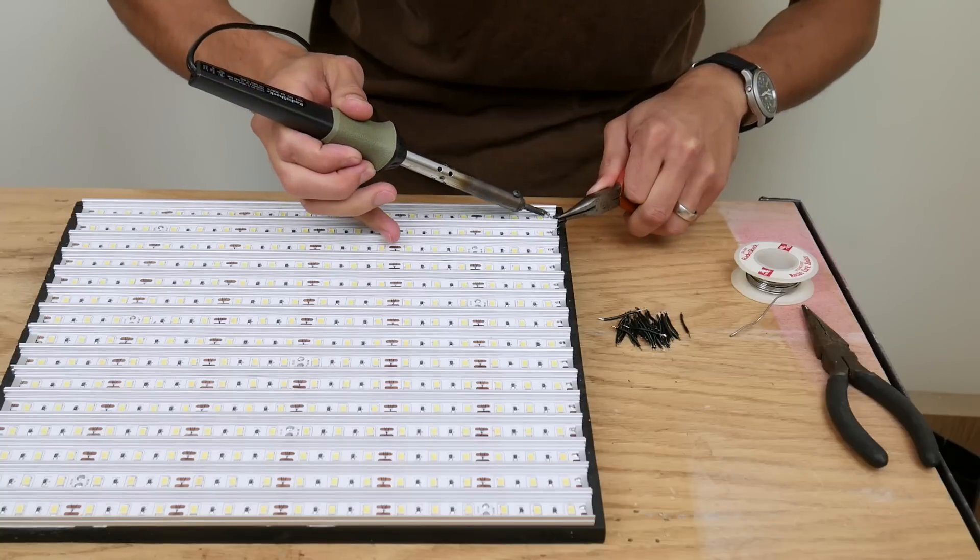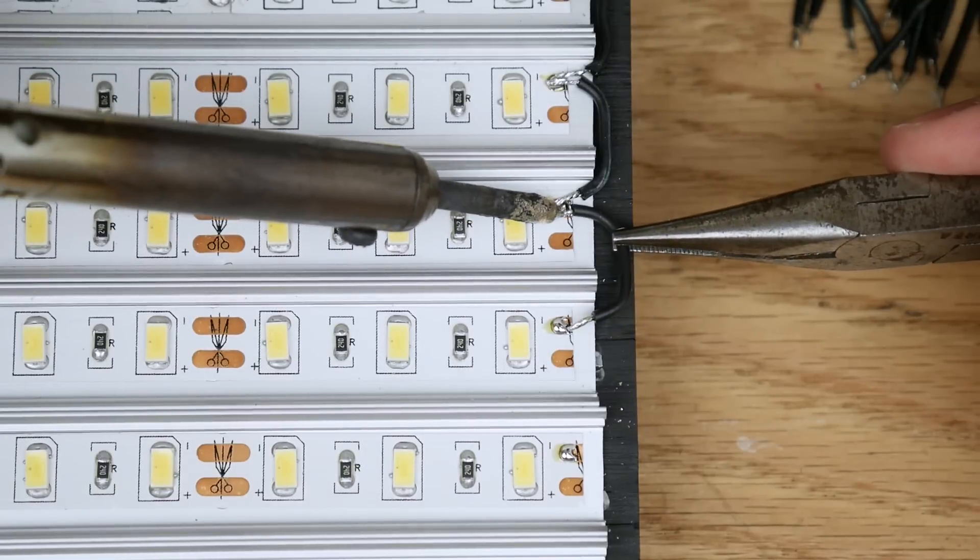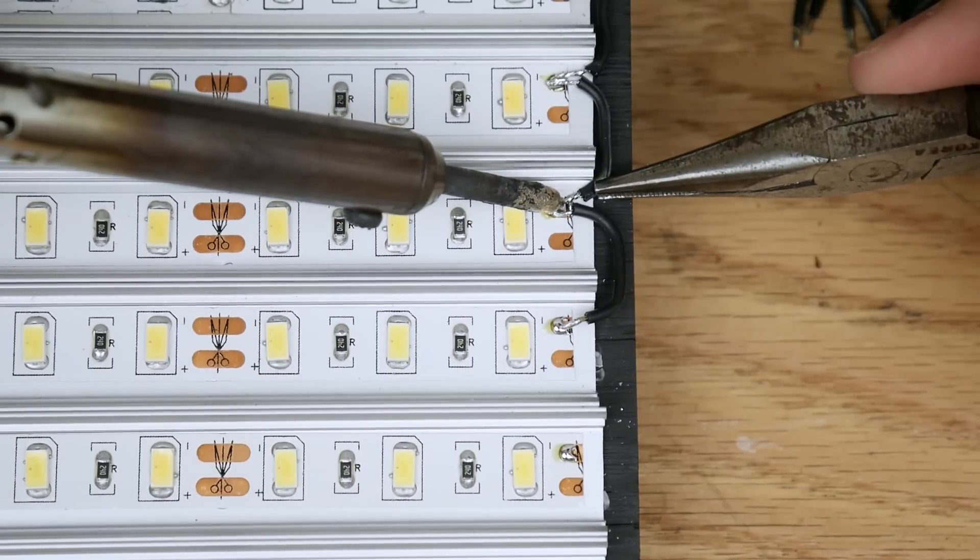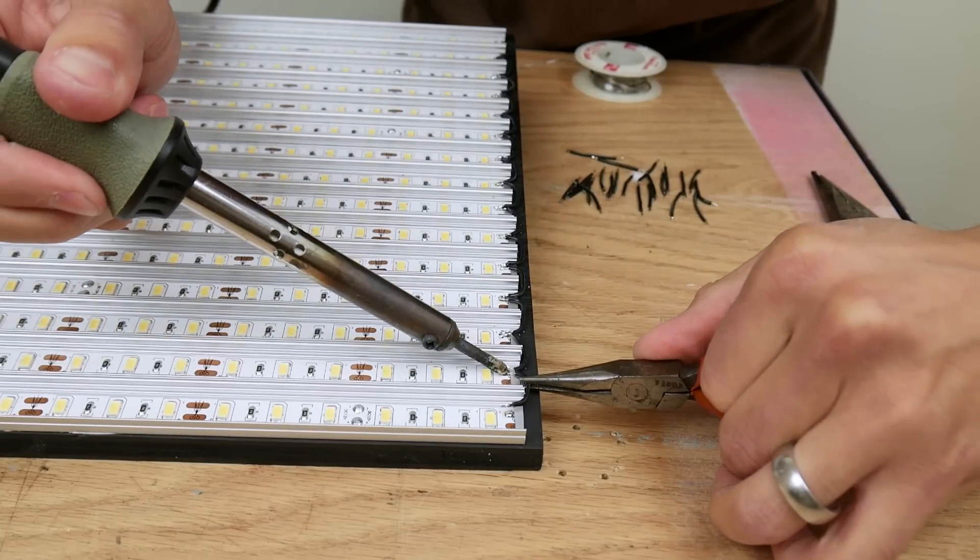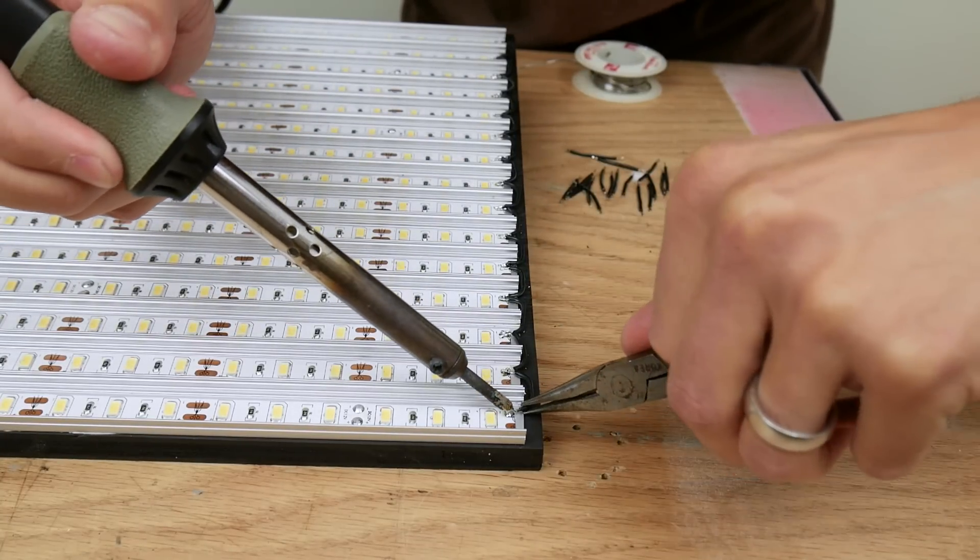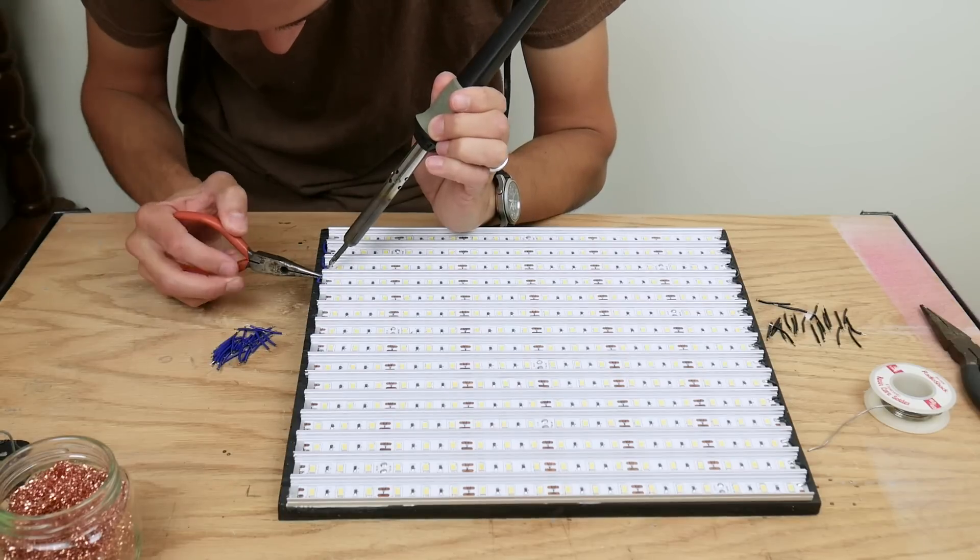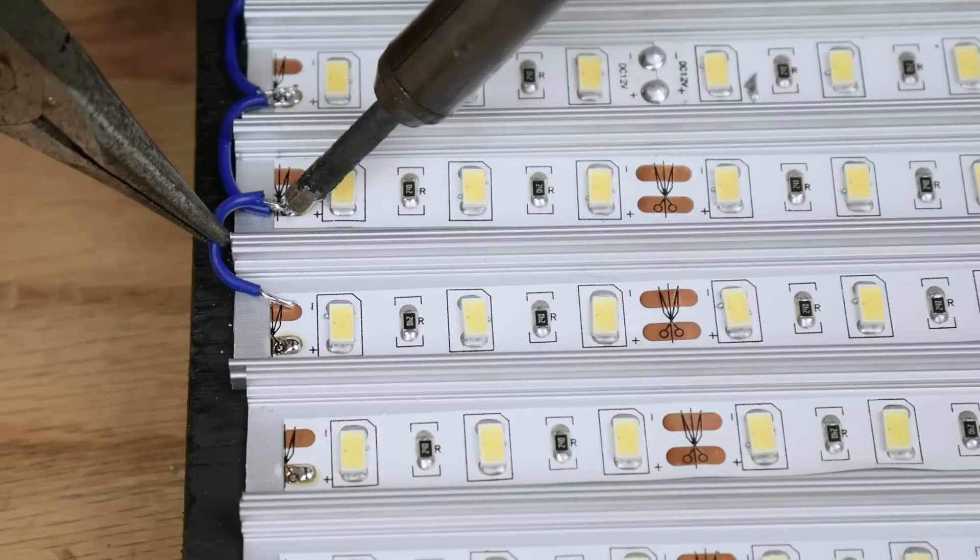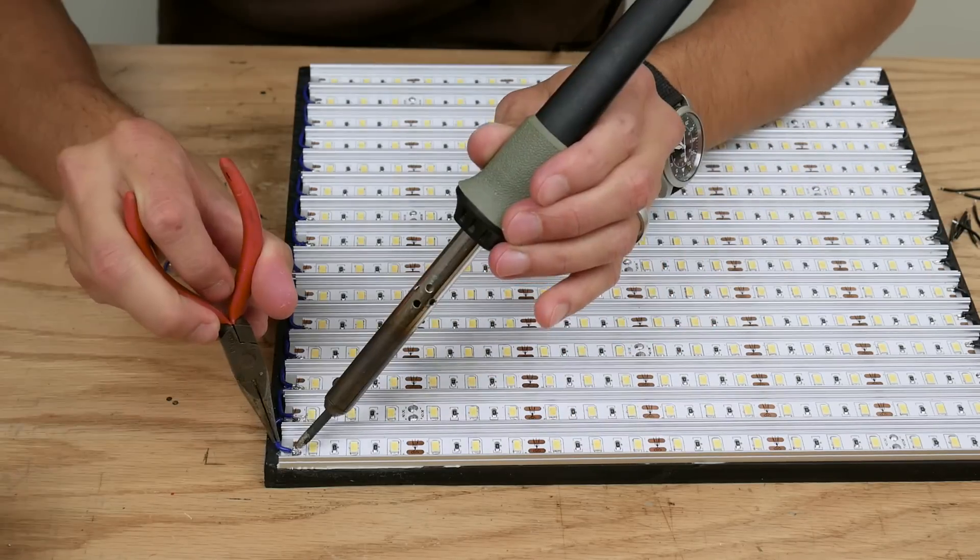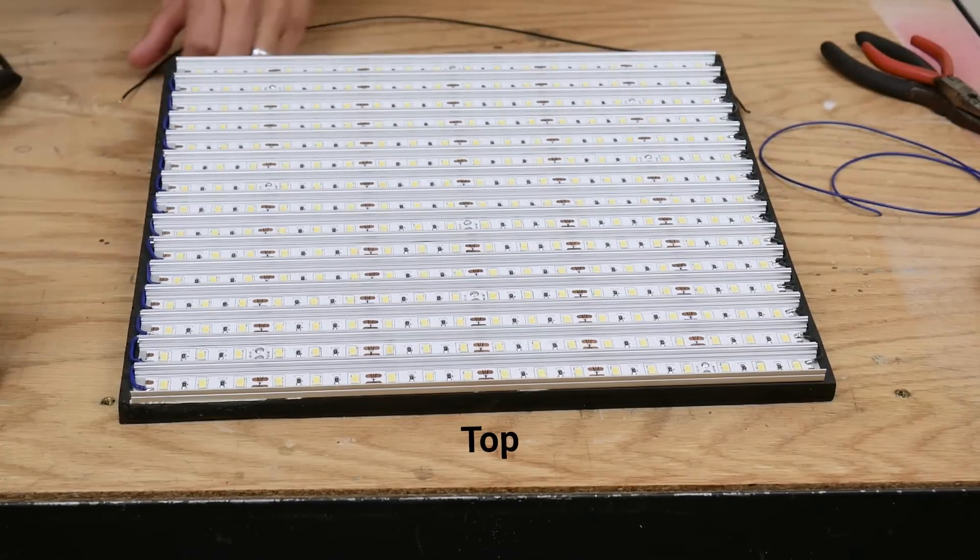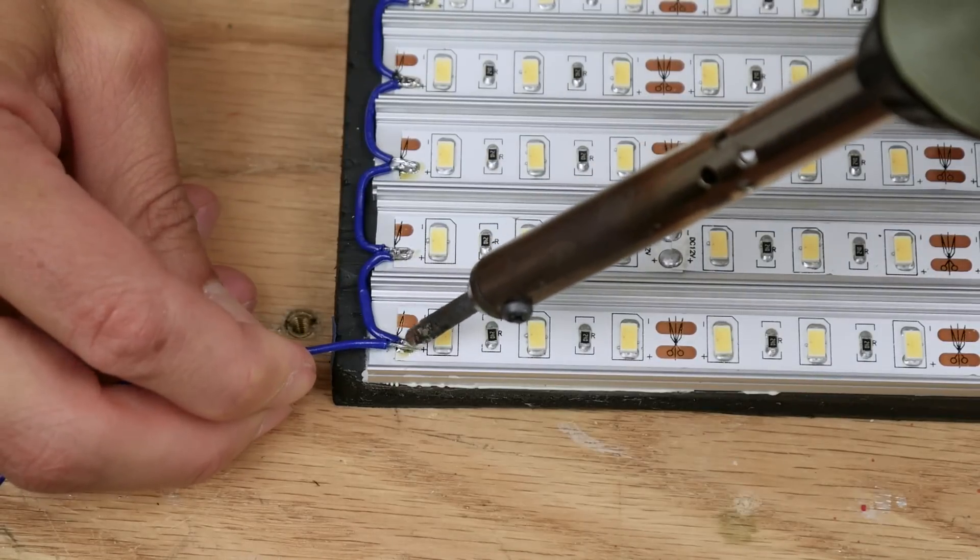On one side of the panel I soldered little pieces of wire to connect the negative pads on all of the LED strips. And on the other side I connected all of the positive pads. I pre-tinned the wires and pads to make this part easier. Then on the LED strip on the top of the panel I soldered an extra long wire to the negative pad on one side. And an extra long wire to the positive pad on the other side.